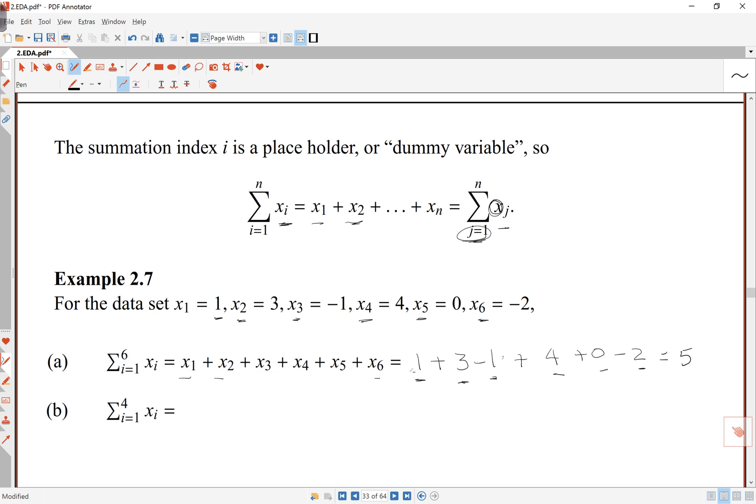If I look at the second example, the second part here, i equals 1 to 4 of xi. So instead of going all the way to 6, I'm stopping at 4. So this is only going to be x1 plus x2 plus x3 plus x4. So this will be my first four numbers: 1 plus 3 minus 1 plus 4, and that comes to 7.